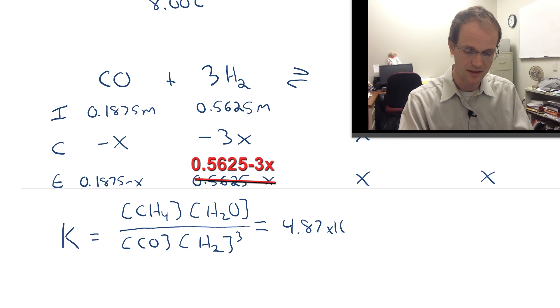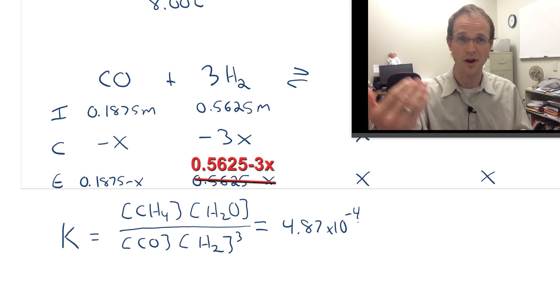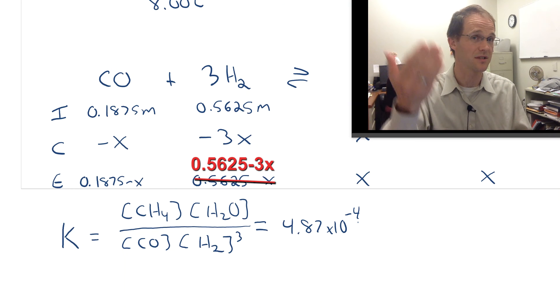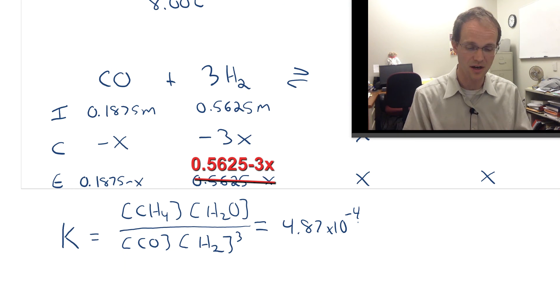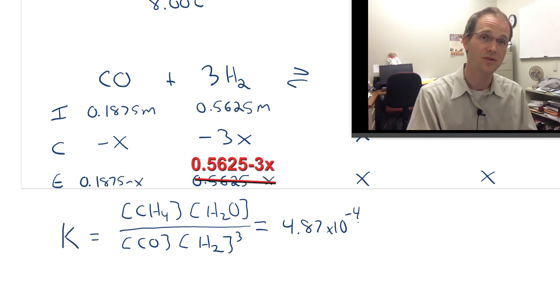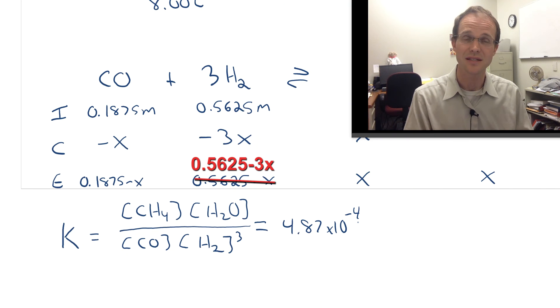We notice that number is fairly small. What does that mean? Our product concentration is going to be relatively low at equilibrium. We've got a small number, so the numerator is small and the denominator is large. What does that mean about our reaction? It's not going to run very far. It's not going to go to the right very much. It's not going to make a lot of products. That tells us that X is likely to be very small, and we'll use that in just a moment.